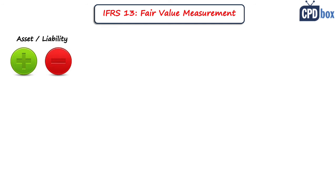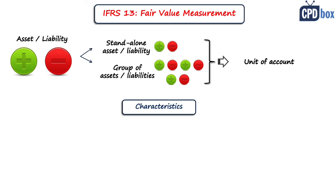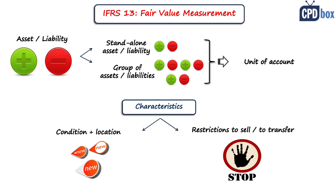Regarding the first factor — the particular asset or liability — you need to determine whether you are valuing an individual asset or liability, or a group. This depends on the unit of account, which is set by other standards, not IFRS 13 directly. IFRS 13 also requires consideration of the asset's characteristics: its condition, location, and any restrictions that might prevent its sale or use.